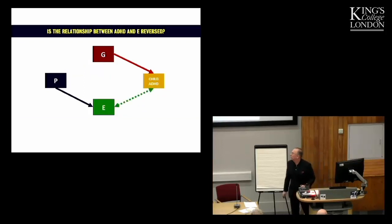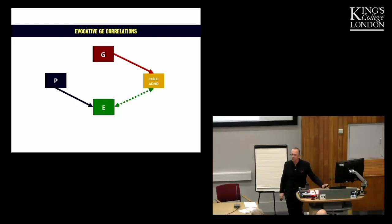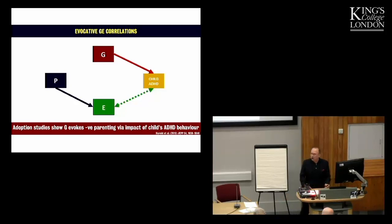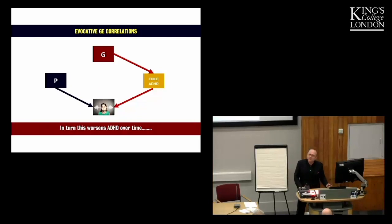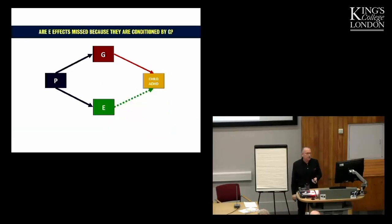So then, is the relationship between the ADHD, the genes, and the environment reversed? So-called evocative gene-environment correlations. Adoption studies suggest that genes can evoke negative parenting, for instance, or maybe other adverse effects via their role in determining ADHD. That over time in development, exacerbate ADHD and create complications like childhood oppositional problems. Evocative and passive and evocative gene-environment correlations, clearly important.